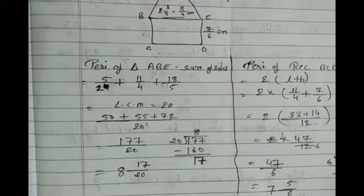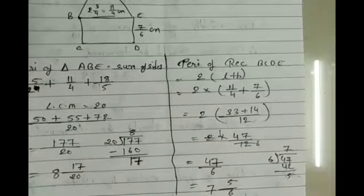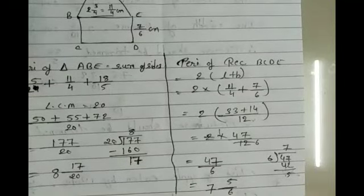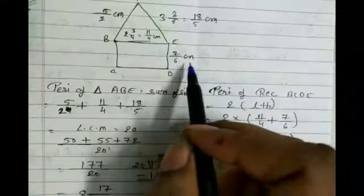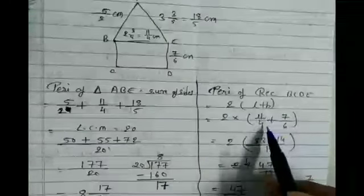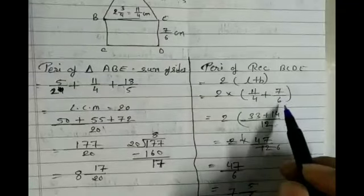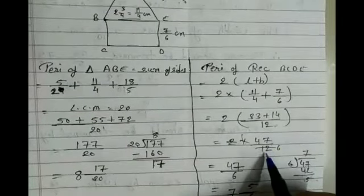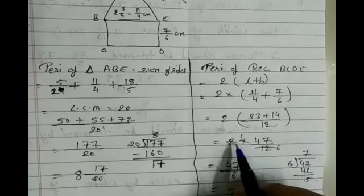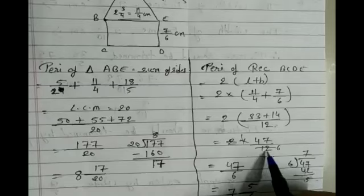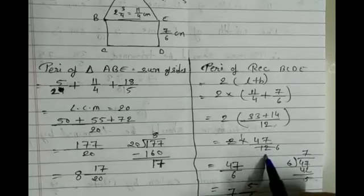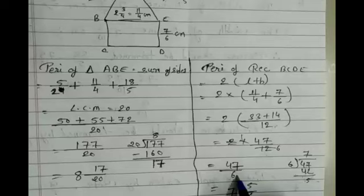Now we find the perimeter of the rectangle. The formula is 2 × (length + breadth). So it is 2 × (11/4 + 7/6). Adding 11/4 and 7/6 gives 47/12. Multiplying by 2 and simplifying, we get 47/6.